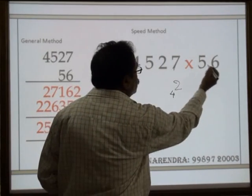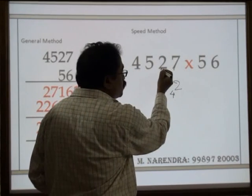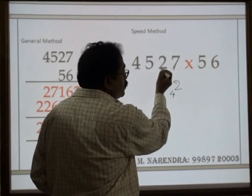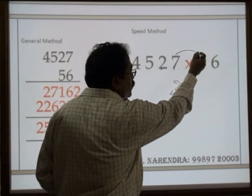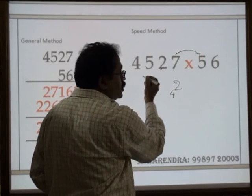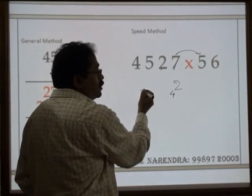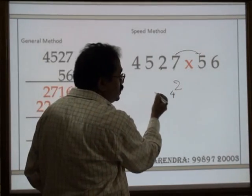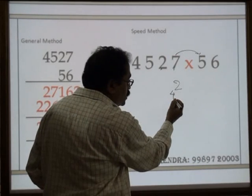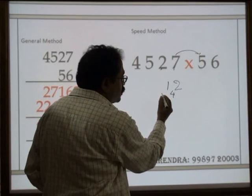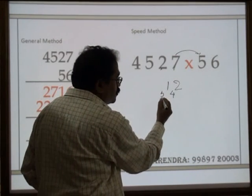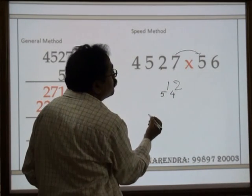Next: 6 times 2 is 12, plus 7 times 5 is 35. Twelve plus 35 is 47, plus carry 4 is 51. Carry 5.